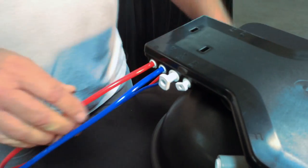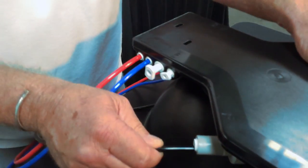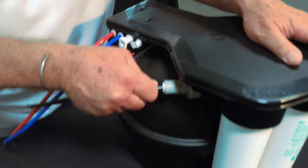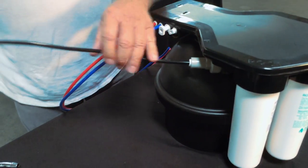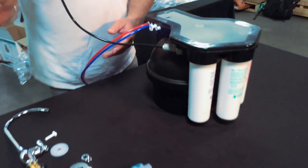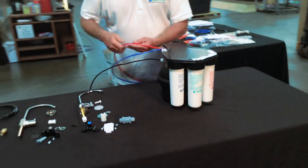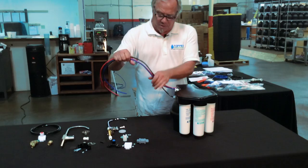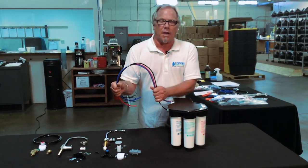The red line here is for our drain line. We're going to push that in all the way. And black is over here for our feed, and this will go to our feed adapter, to our dedicated faucet, and to our drain line. And the system now is ready for the under-the-counter installation.